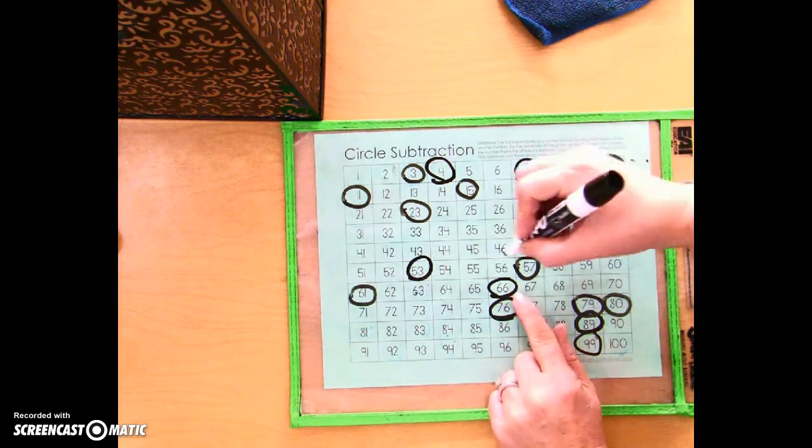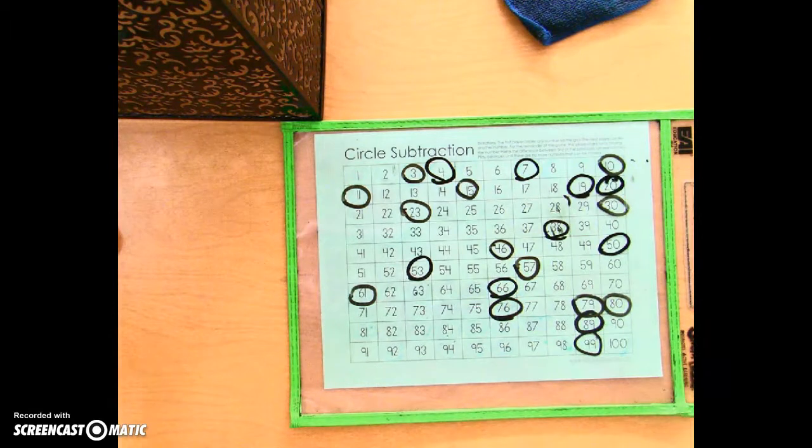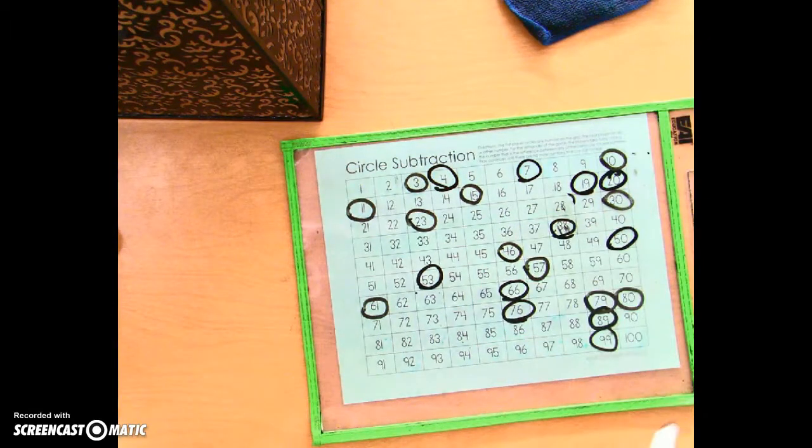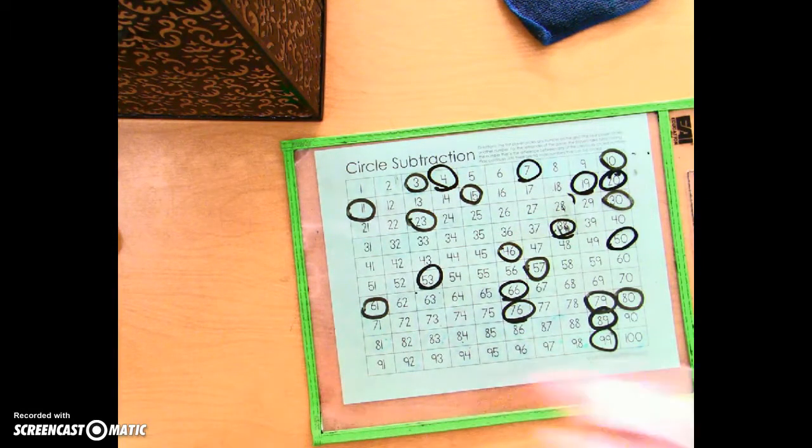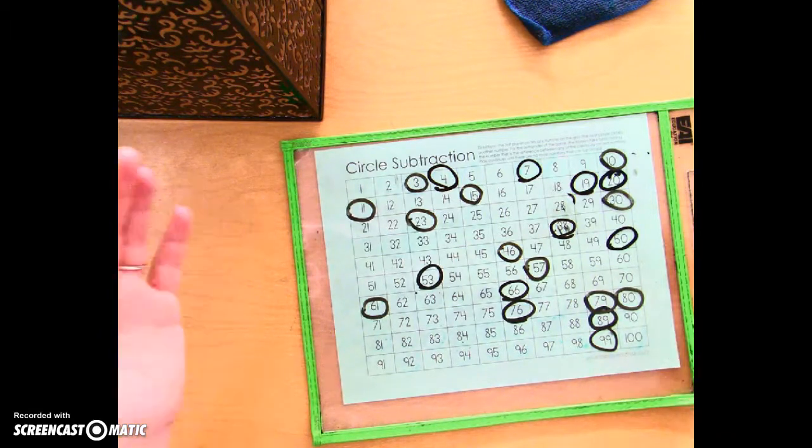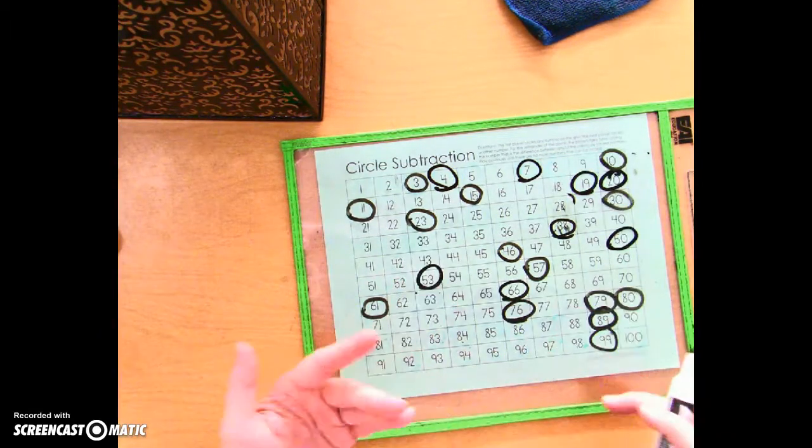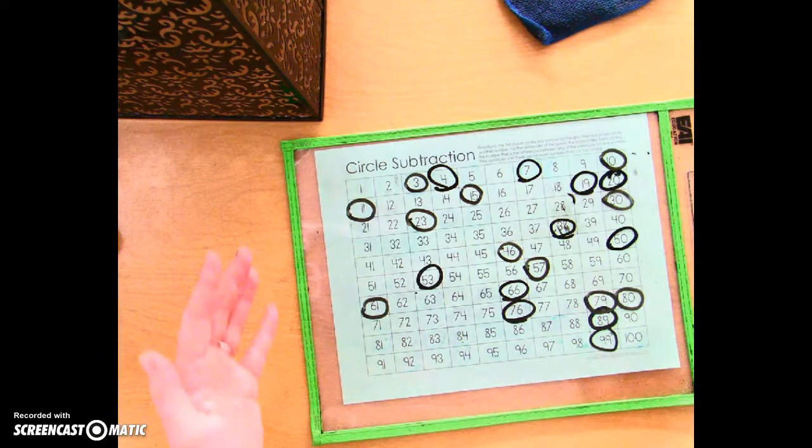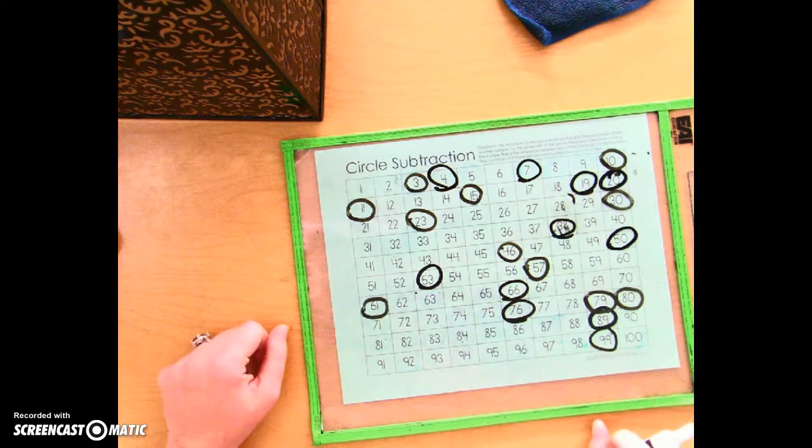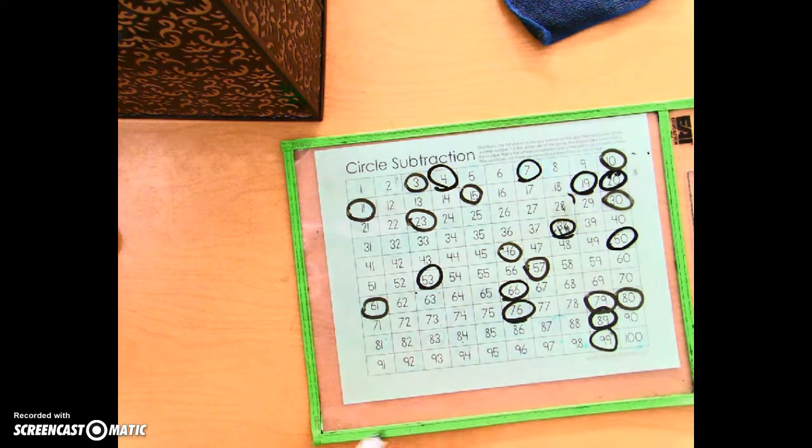66 minus 20 is 46. Play continues like this until a person encounters they can't find anything else that can be subtracted or anything else that can be circled. That person's the loser. And that's how you play Circle Subtraction. Thanks for playing!